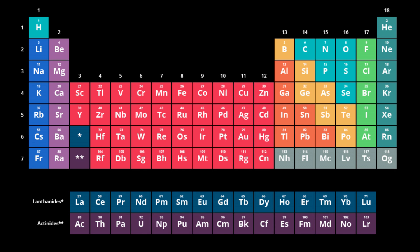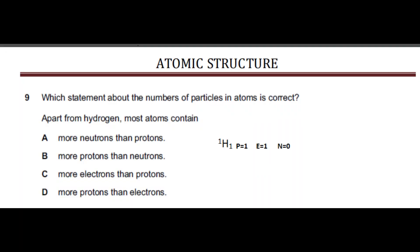Looking at the periodic table, for a neutral atom, the number of protons is equal to the number of electrons. So options saying electrons are more than protons, or protons more than electrons, are completely wrong. Most atoms apart from hydrogen have more neutrons than protons. You can verify this by counting from the periodic table — that is the fact you need to memorize. The correct answer is: most atoms in the periodic table have more neutrons than protons.